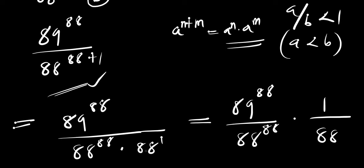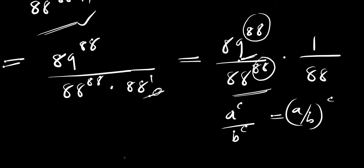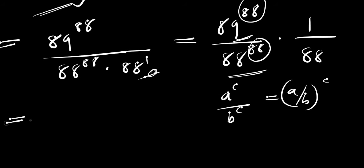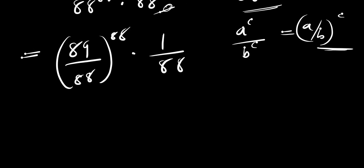We take the 1/88 factor outside. Now the powers at the top and bottom match, so we apply the identity a^c divided by b^c equals (a/b)^c. This gives us (89/88) raised to the power of 88, times 1 divided by 88.